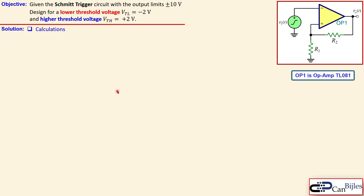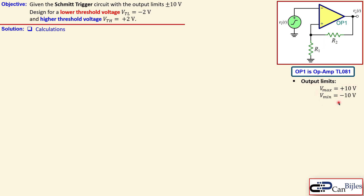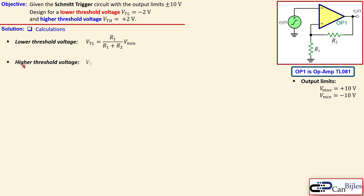For this circuit we will use the operational amplifier TL081, and we will see later in the simulation what that means for powering the op-amp. The output limits are V_max = +10V and V_min = -10V. The formula for the lower threshold voltage for this circuit is: V_TL = (R1 / (R1 + R2)) × V_min, and similarly for the high threshold voltage: V_TH = (R1 / (R1 + R2)) × V_max.